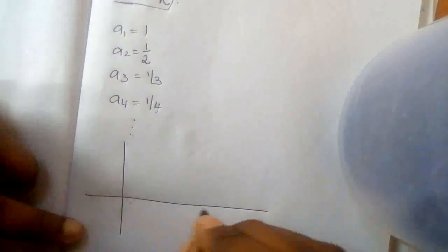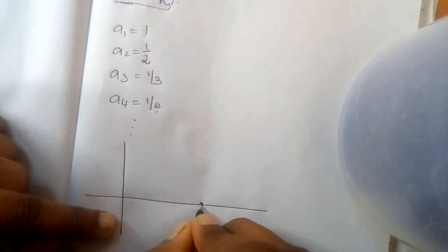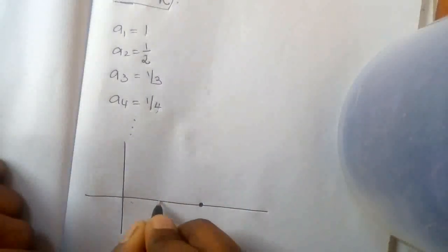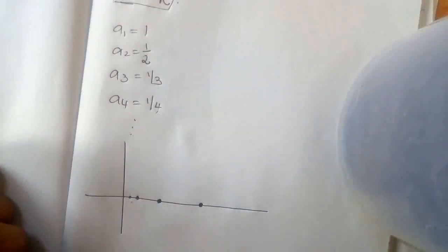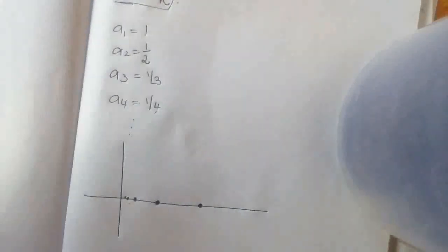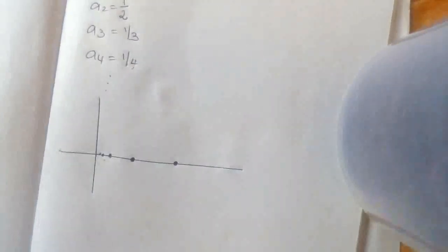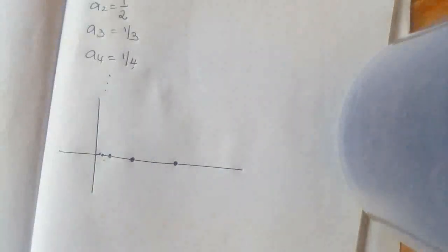We can plot these points in the x-y plane. Corresponding to n, what are the values of 1/n? So n=1 gives 1, n=2 gives 1/2, n=3 gives 1/3, n=4 gives 1/4, n=5 gives 1/5. As n goes to infinity, 1/n goes to 0. That is the meaning of the limit — as n becomes large, 1/n goes near to 0.